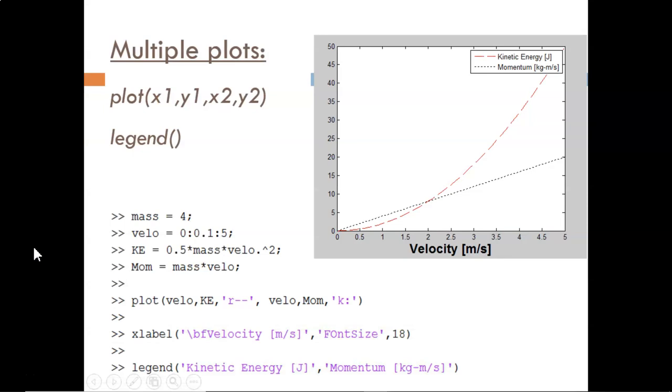The first method is to use one call of the plot function with multiple sets of x and y inputs. The plot function is very flexible and can accept any number of paired vectors, as well as the appearance modifiers that go with each one.